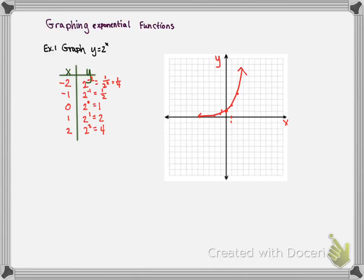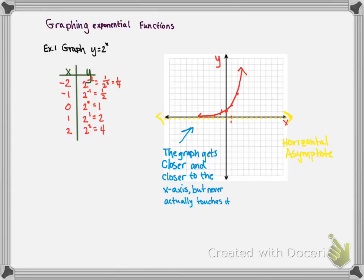Our curve looks like this. Now, the x axis is going to be our horizontal asymptote. The graph gets closer and closer to the x axis, but never actually touches it.